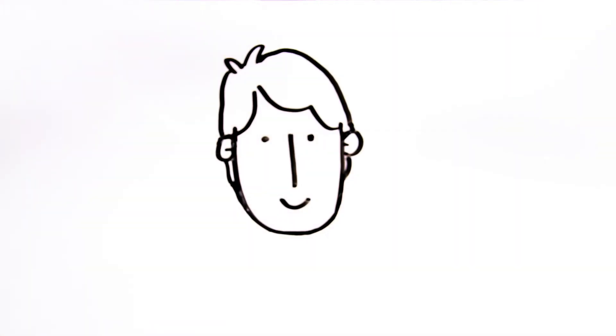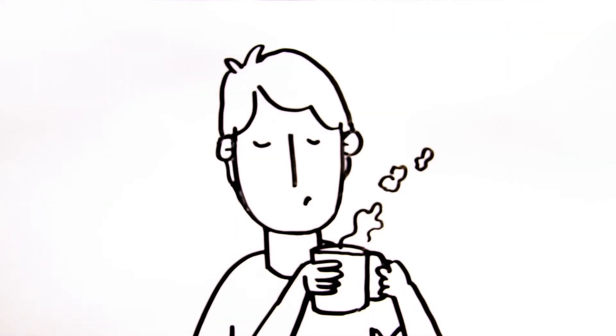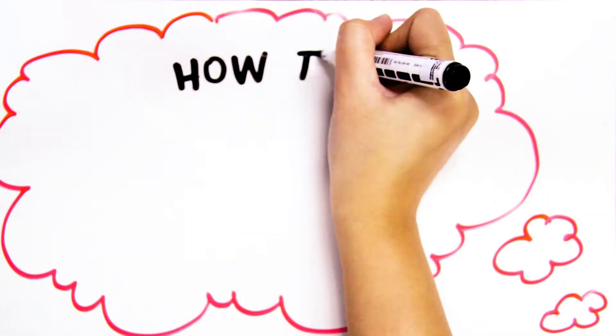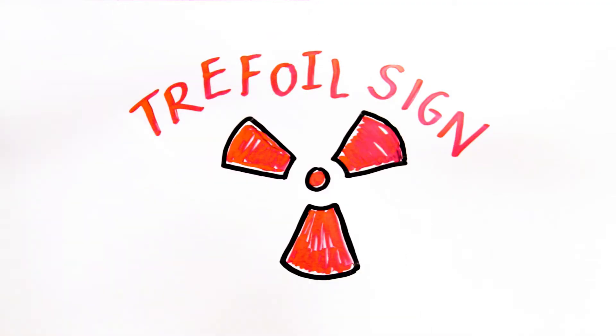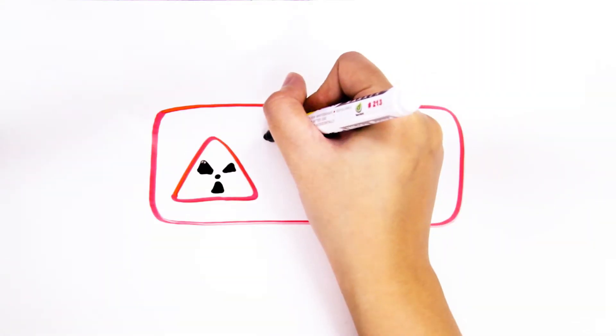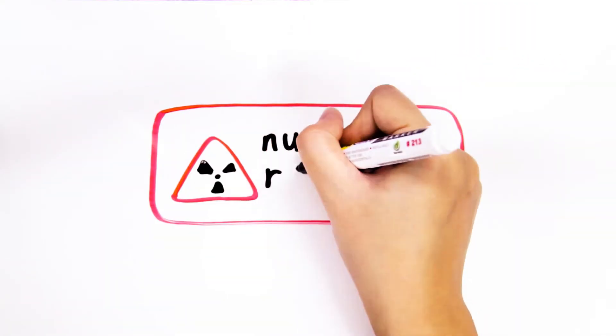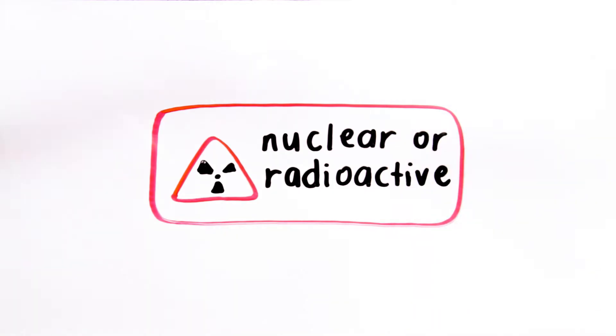But most of us are just your average Joes sipping our cups of coffee. So there has to be a simpler, more practical way for us to protect ourselves from radiation. The most important of which is the trefoil sign. As we mentioned in an earlier video, a trefoil sign means that the object or area labeled has nuclear or radioactive materials.